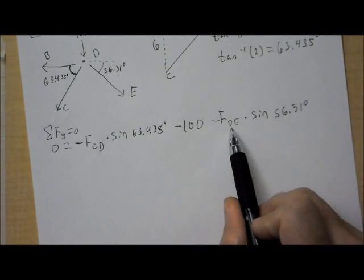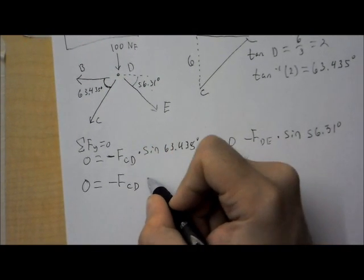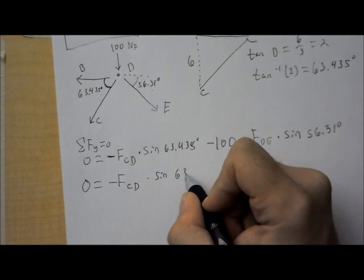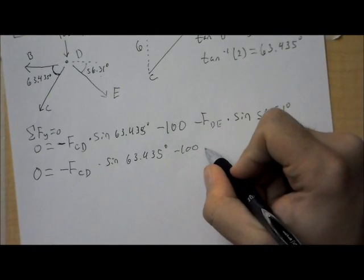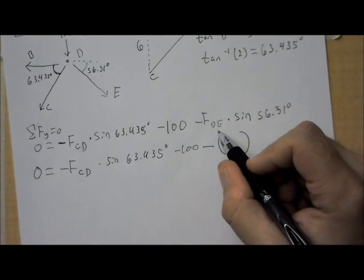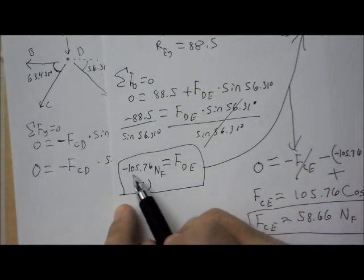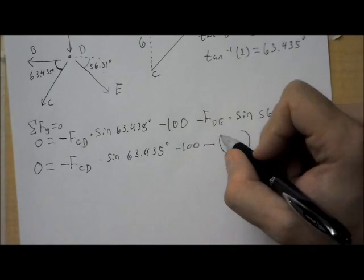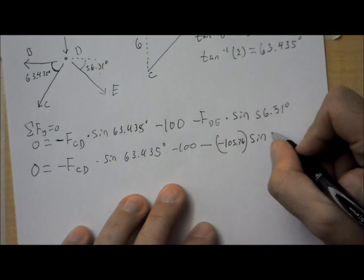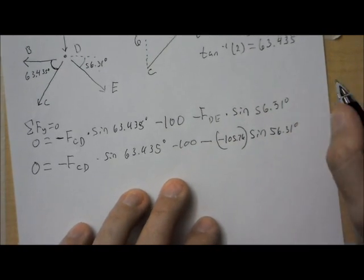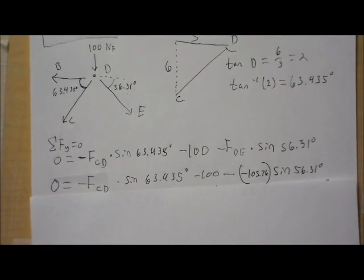Okay. Now, we don't know force of CD, but we do know force of DE. So, I'm going to rewrite this and fill that in. Minus, and then what is force of DE? Well, if I go back to my free body diagram at E, my force at DE was negative 105.76. Negative 105.76 times sine of 56.31 degrees. Okay. Now, my only unknown is FCD.